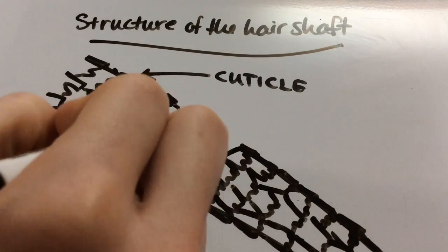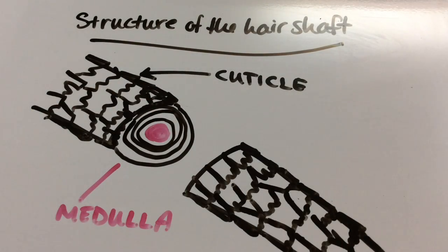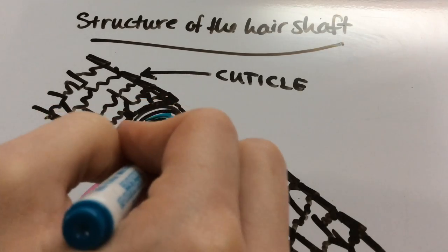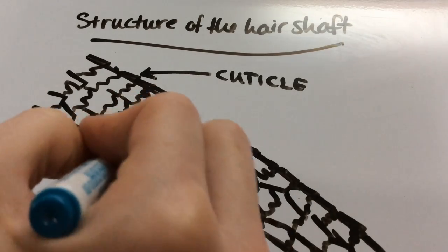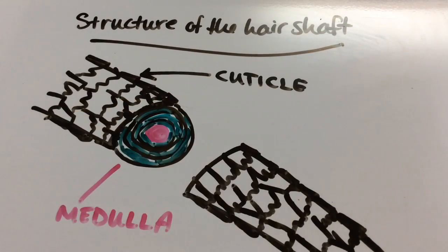The middle pink is the medulla. Not everyone has a medulla layer - a lot of brunettes tend to, but not all of them do. It's just an innermost layer of round cells.